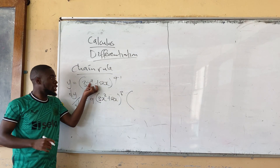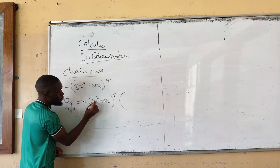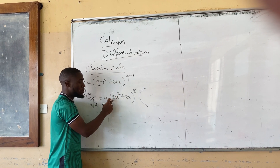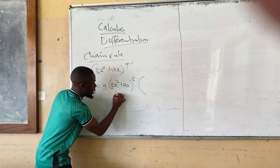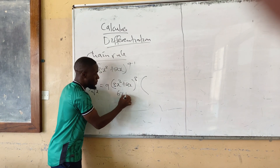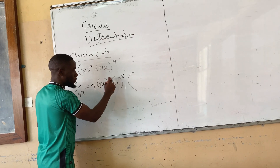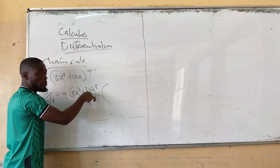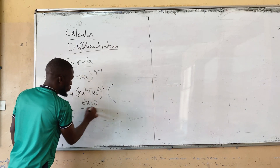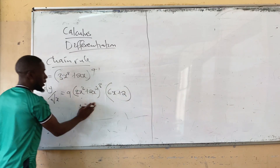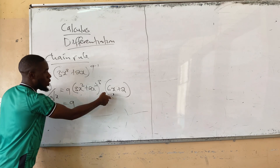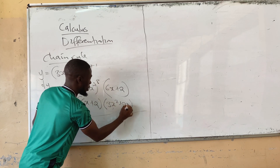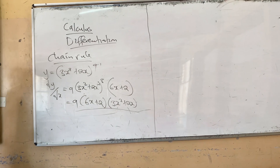Now you differentiate what is inside. Differentiating 3x squared: drop the power 2, multiply, giving 6x. Then differentiating 2x: drop the power 1, multiply by 2, giving 2 — since x to the power 0 equals 1, it becomes just 2. So the derivative inside is 6x plus 2. The final answer brings everything together. This is the quickest method.